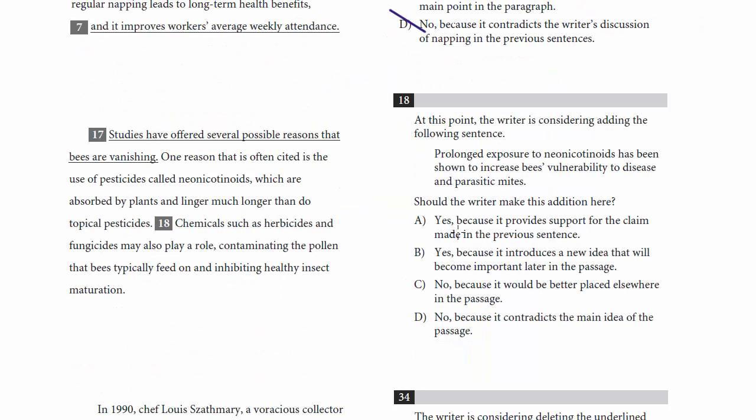Let's check out 18. At this point, the writer's adding the sentence, prolonged exposure to neonicotinoids has been shown to increase bees' vulnerability to disease and parasitic mites. Let's see if we should add this. Studies have offered several possible reasons that bees are vanishing. One reason that is often cited is the use of pesticides called neonicotinoids, which are absorbed by plants and linger much longer than do topical pesticides. Prolonged exposure to neonicotinoids has been shown to increase bees' vulnerability to disease and parasitic mites. Chemicals such as herbicides and fungicides may also play a role.